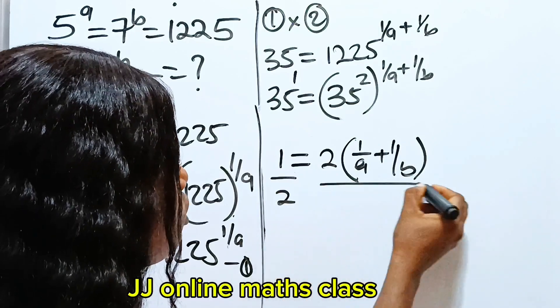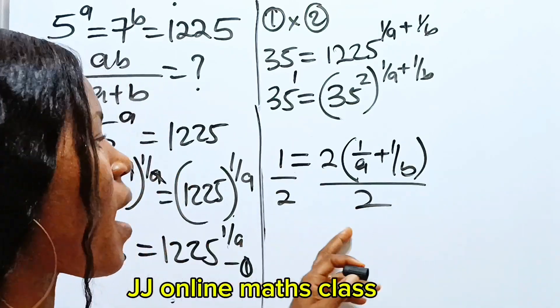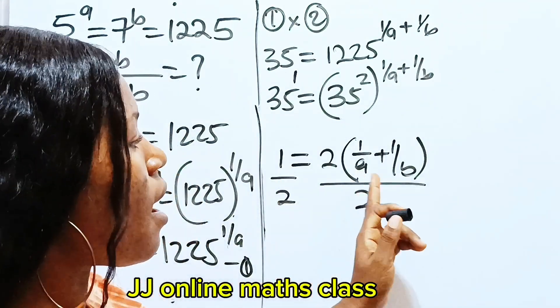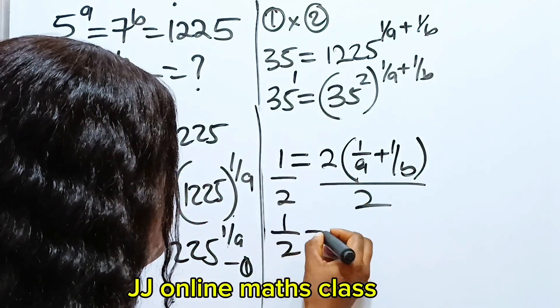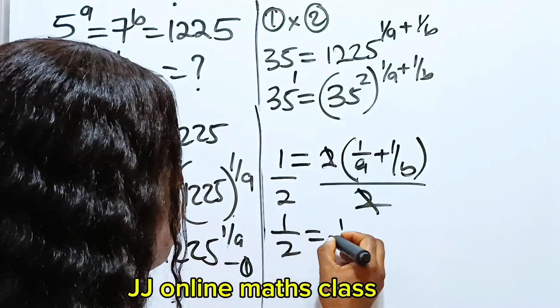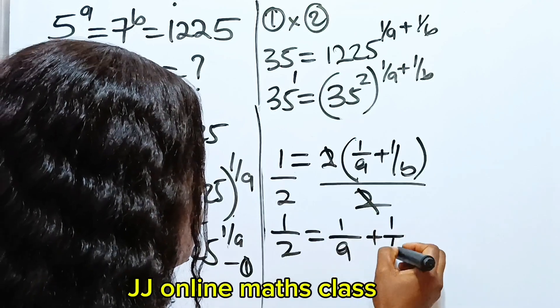Okay, so let's divide through by 2. Why are we doing that? Because we want to have only this remaining, right? So we have that 1 over 2 is equal to what? 1 over a plus 1 over b.